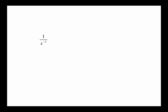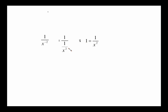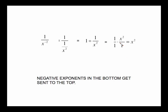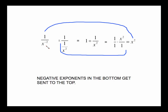Now, if you have 1 over a negative exponent, we have to be able to deal with that too. Recall that x to the negative 2 itself means 1 over x squared. So 1 over x to the negative 2 is the same as 1 divided by 1 over x squared. From early arithmetic, 1 divided by a fraction becomes a multiplication problem — you flip the fraction and multiply — and we end up with x squared. So the negative exponent in the bottom got sent up to the top and became a positive exponent.